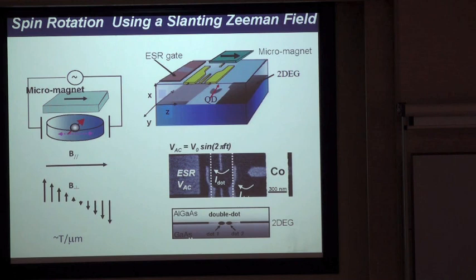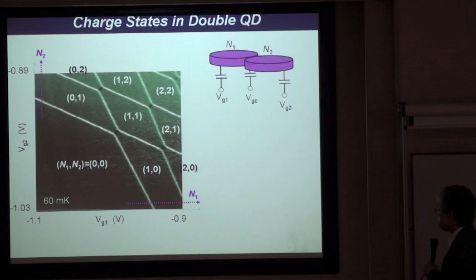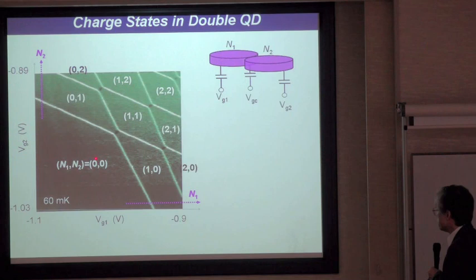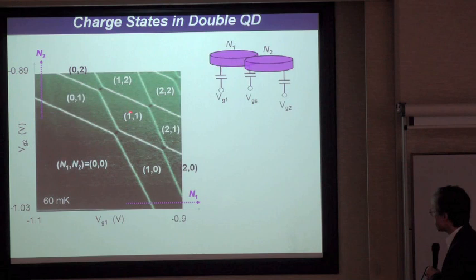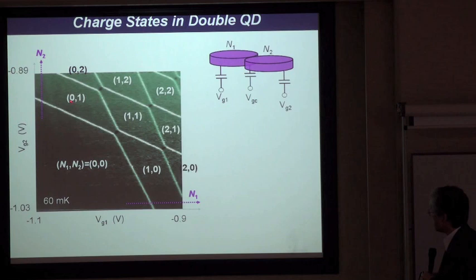We can measure the stability diagram or charge state diagram of the double-dot system. The measured results show a series of hexagons, where the brackets indicate the number of electrons in the two dots. This area has both dots empty; here the left dot has just one electron; the right dot has just one electron; and here each dot has just one electron.